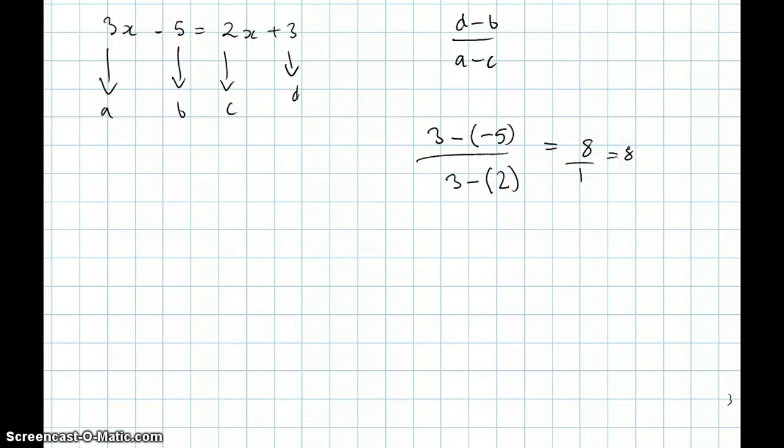We can test this out. Let's just put 3(8) minus 5 equals 2(8) plus 3. 24 minus 5 equals 16 plus 3, which is 19. So LHS is equal to RHS, therefore it's proven.